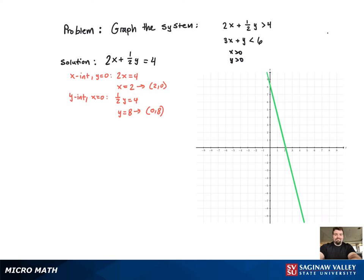Now we can graph. And since it's a strictly greater than inequality symbol, it's going to be a dashed line.